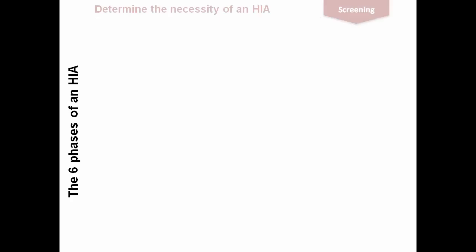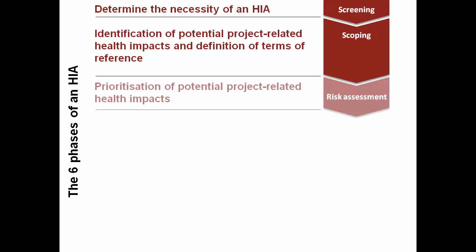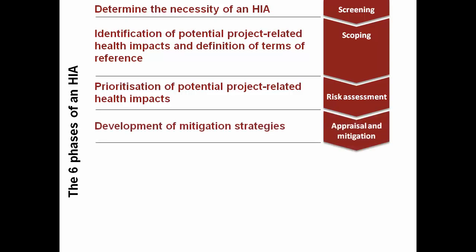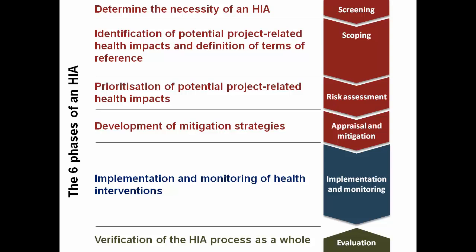Health Impact Assessment commonly follows a six-phase process. In the Screening Phase, the necessity of a Health Impact Assessment is determined. The Scoping Phase identifies potential project-related health impacts and defines terms of reference. A Risk Assessment aims to prioritize potential project-related health impacts. In the Appraisal and Mitigation Phase, health interventions are developed, which are then implemented and monitored in the subsequent Implementation and Monitoring Phase. Finally, the HIA process in its entirety is verified in the Evaluation Phase.